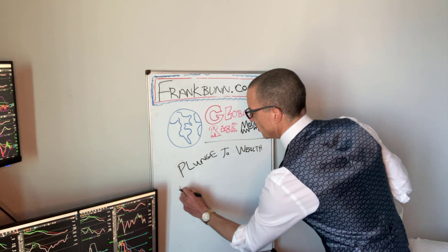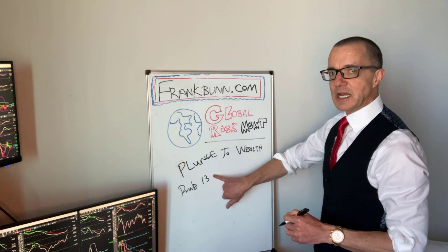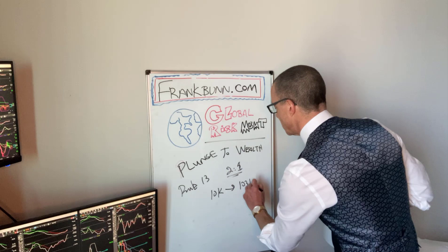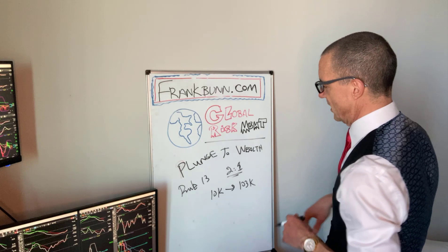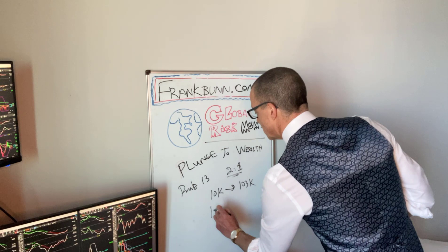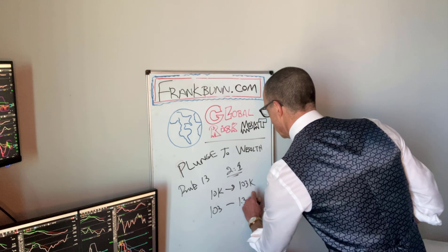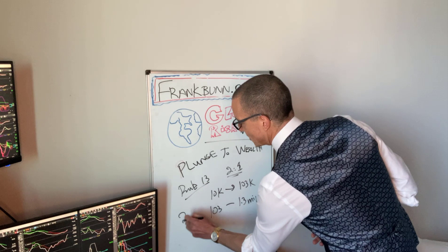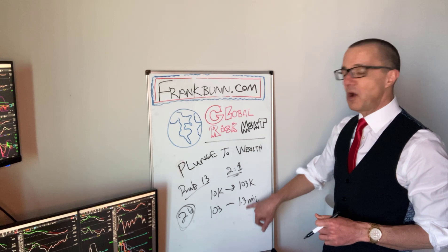We're going to talk about plunging to wealth. We have what's called the Rule of Thirteen. Thirteen ten-percent trades, leveraged two to one with Reg T margin, will take ten thousand dollars to roughly one hundred and three thousand dollars. There are tax concerns we're not calculating here. The next thirteen trades will take that hundred and three thousand to one point three million.